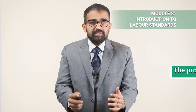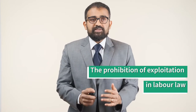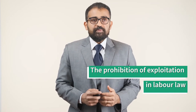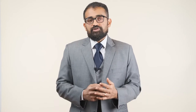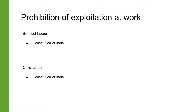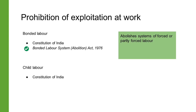Along with setting out minimum standards for work, labor law also prohibits some exploitative aspects of the employment relationship. In this video we will learn about these prohibitions. The Constitution of India expressly prohibits bonded labor and the employment of children under the age of 14 in any factory, mine or other hazardous activity. The Bonded Labor System Abolition Act of 1976 abolishes systems of forced or partly forced labor and sets out punishments for those committing or abetting these acts.